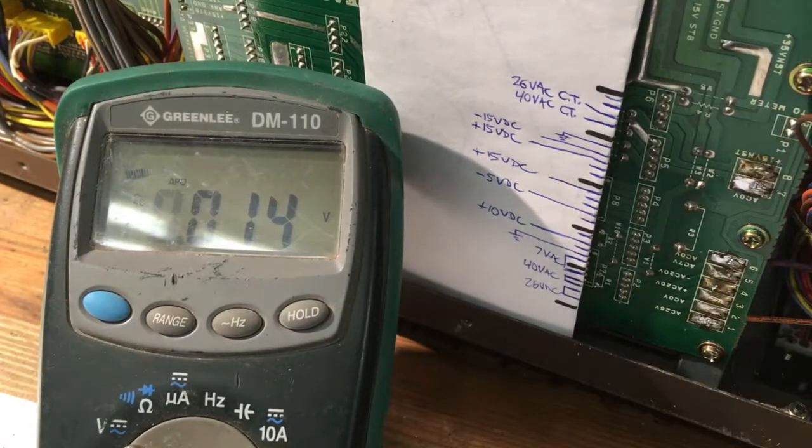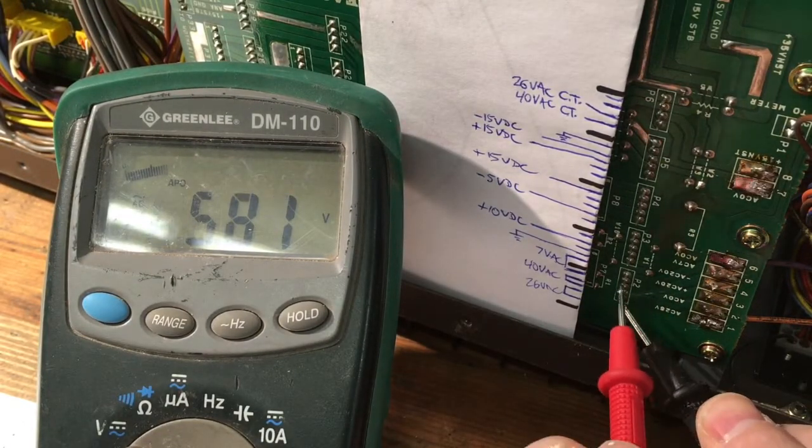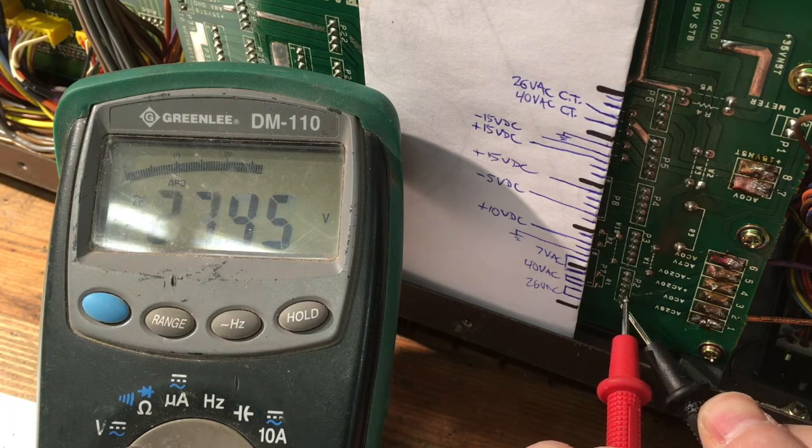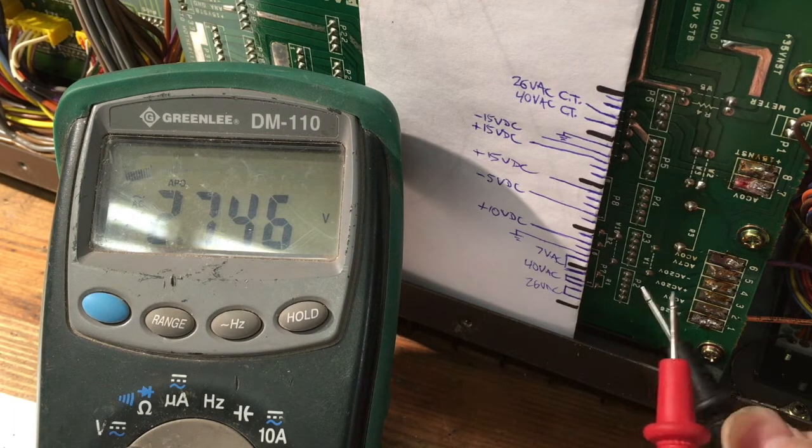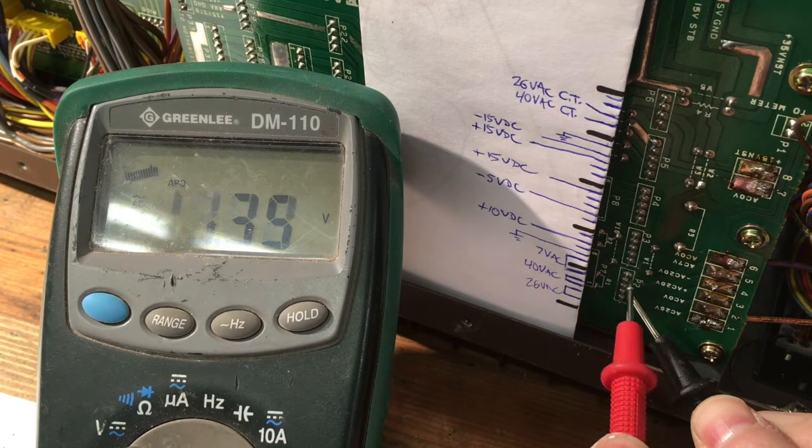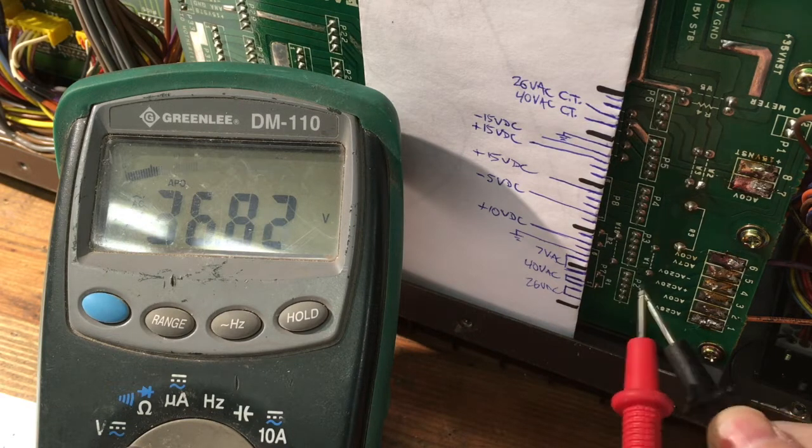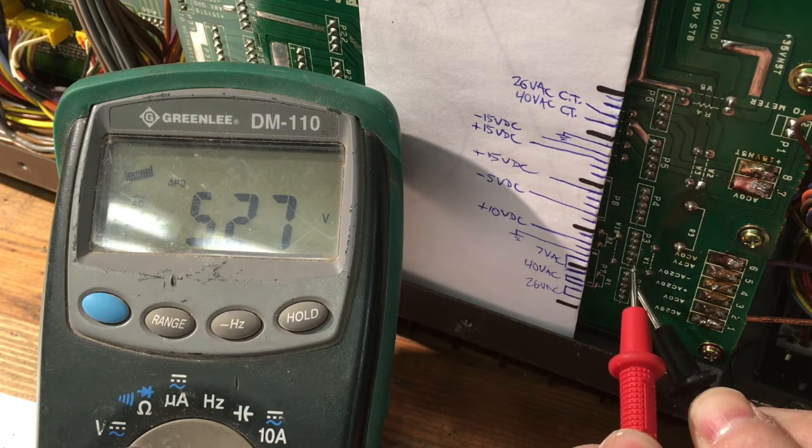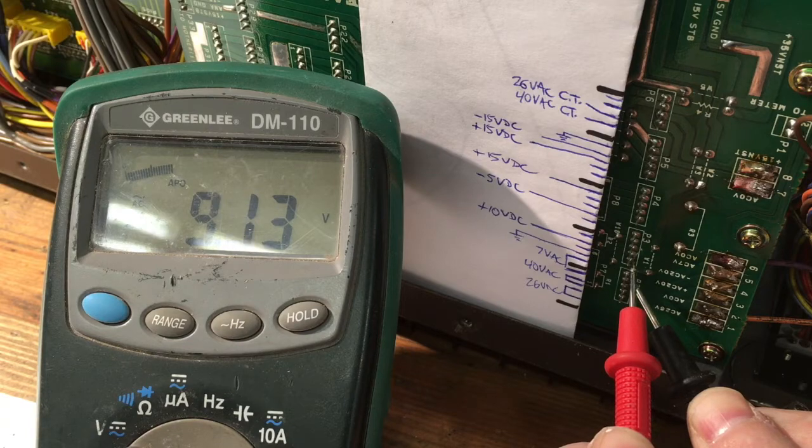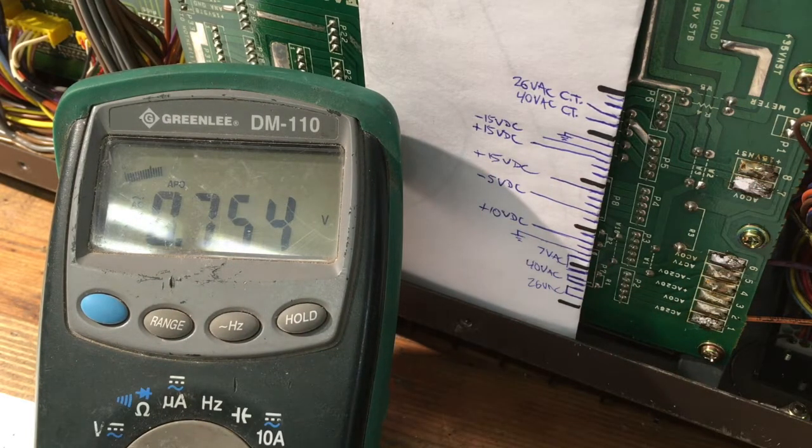Okay, here we are. I should have 26 volts across here. Close enough. I should have 40 volts across here. Close enough. And I should have 7 volts AC across here. I'll take it. Okay, so AC is going in.